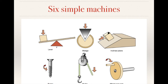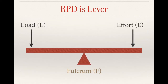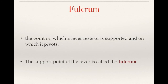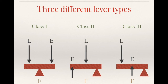In physics, machines can be divided into six different simple machine types. The RPD, the removable partial denture, is a lever. A lever has a load, an effort, and a fulcrum point. The fulcrum is the point on which a lever rests or is supported — its pivot point. Based on the different relationships between force and fulcrum, we can divide levers into three types: class 1, class 2, and class 3.